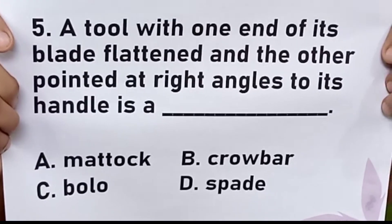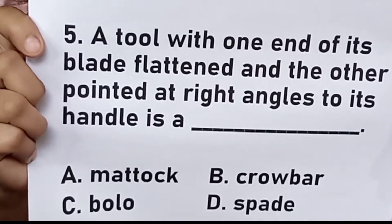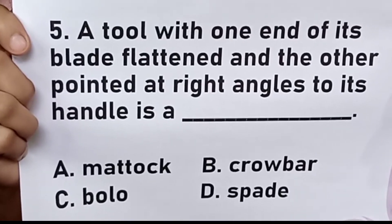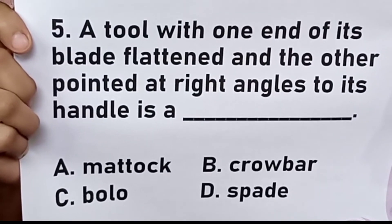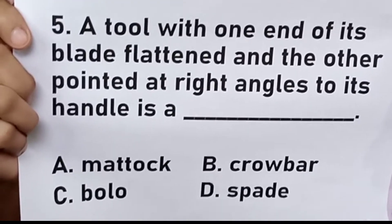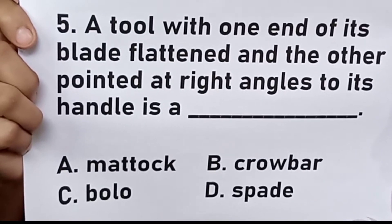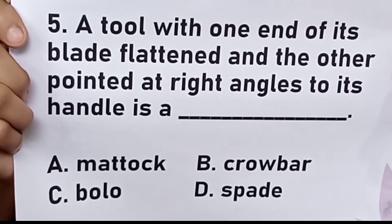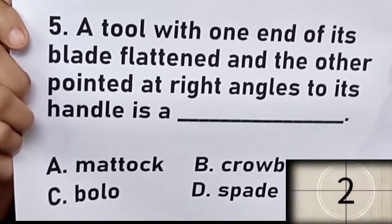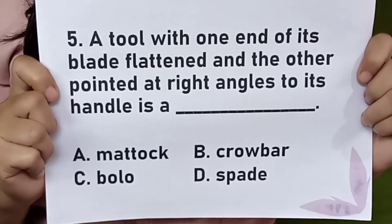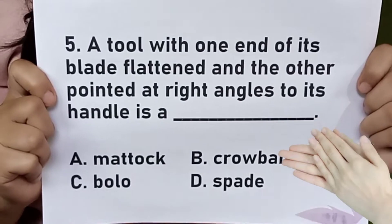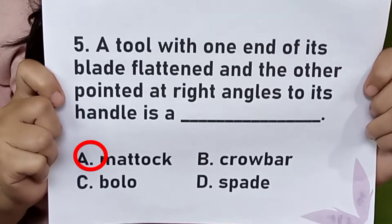Question number five: a tool with one end of its blade flattened and the other pointed at a right angle to its handle is — letter A, matok; letter B, crowbar; letter C, bolo; letter D, spade. Very good, your answer is correct. The answer is letter A, matok.